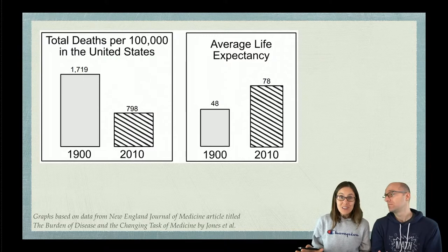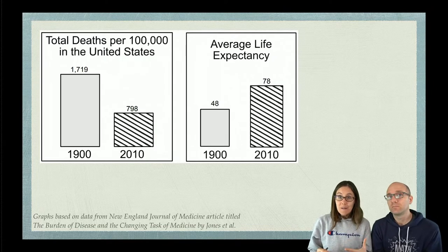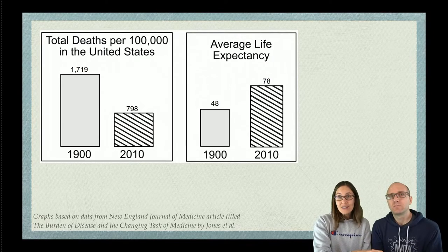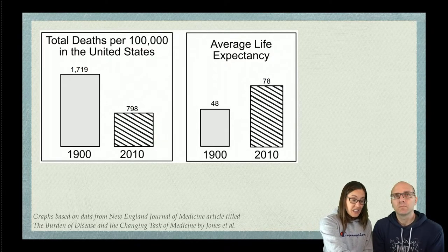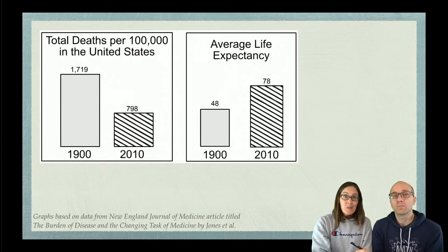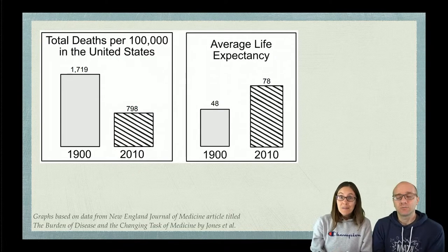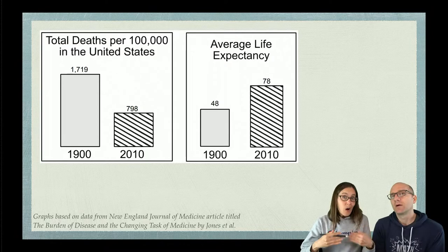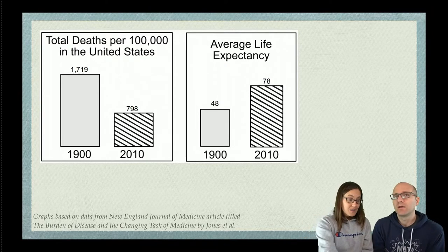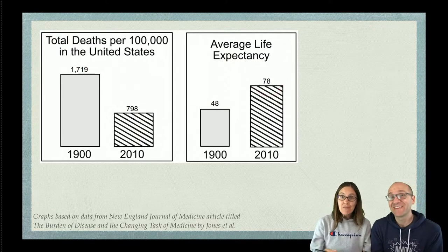If we look at mortality rates — how often people died — from 1900 to 2010, there's been a dramatic difference. This is data for the United States, but we see similar trends all over the world. The total deaths per 100,000 people in 1900 was over a thousand, but in 2010 it dropped dramatically — less than half. The average life expectancy in 1900 was 48; in 2010 it's 78. That's 30 extra years of life — huge.